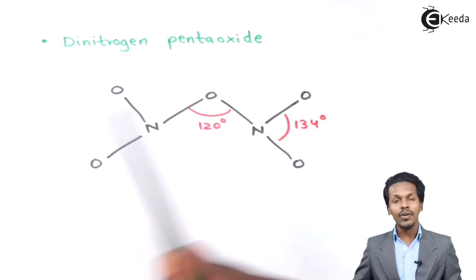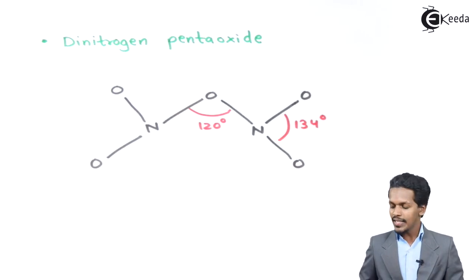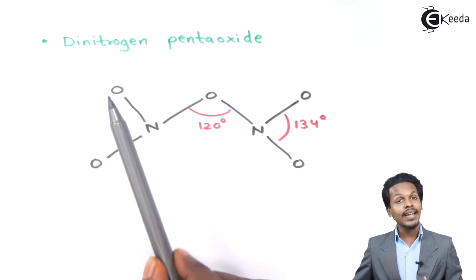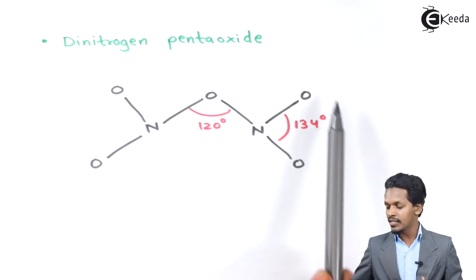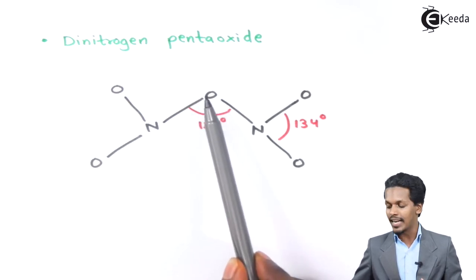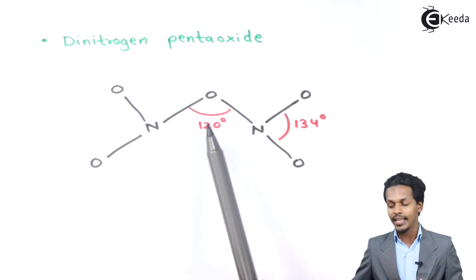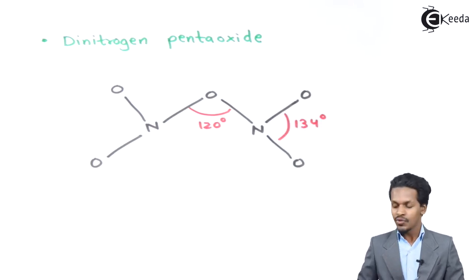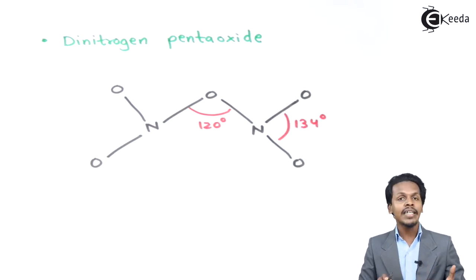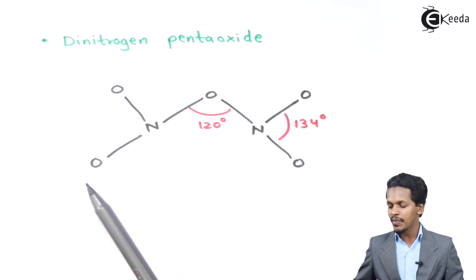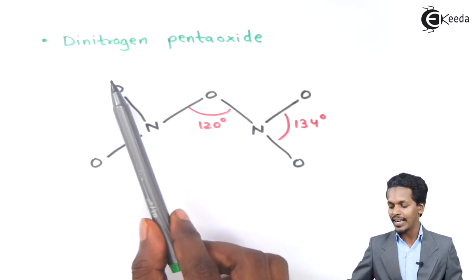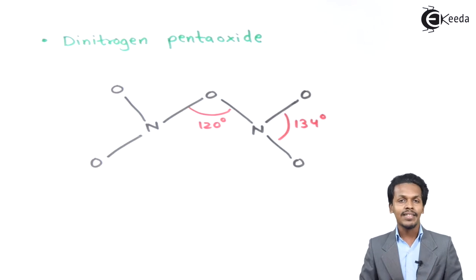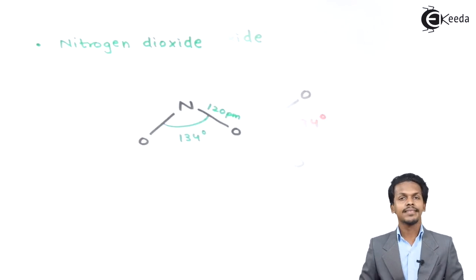The next is Dinitrogen Pentoxide. In this case, Nitrogen is attached to two other Nitrogen atoms, and the whole group is linked with this Oxygen atom, making an angle of 120 degrees here and 134 degrees here. The resonance is not represented here, but a negative charge is found on the Oxygen atoms in this structure.